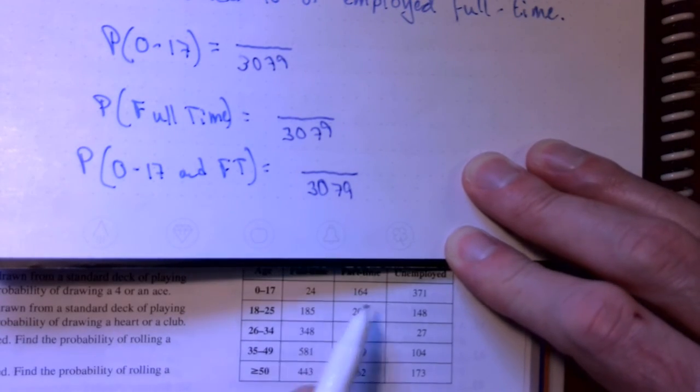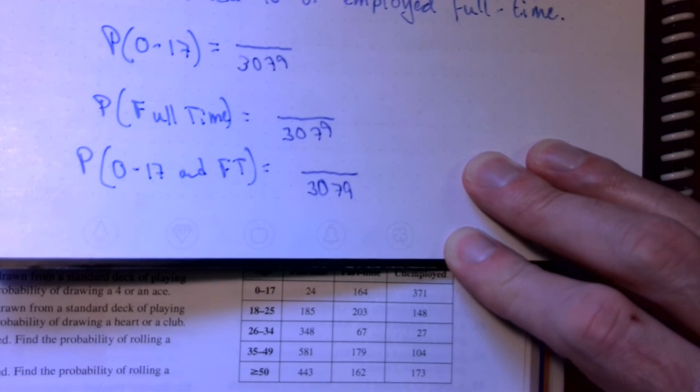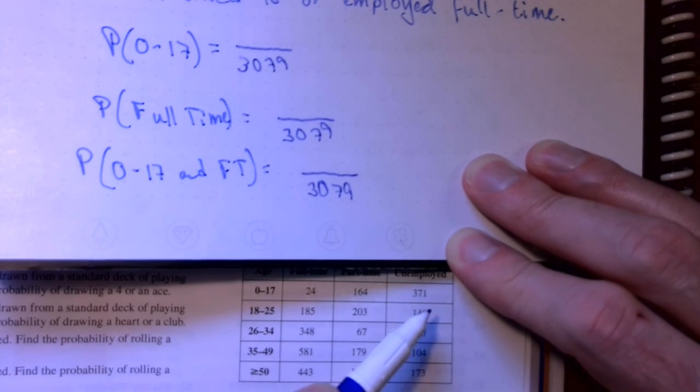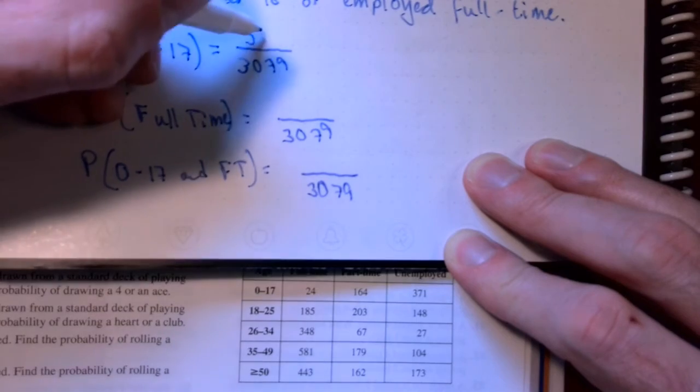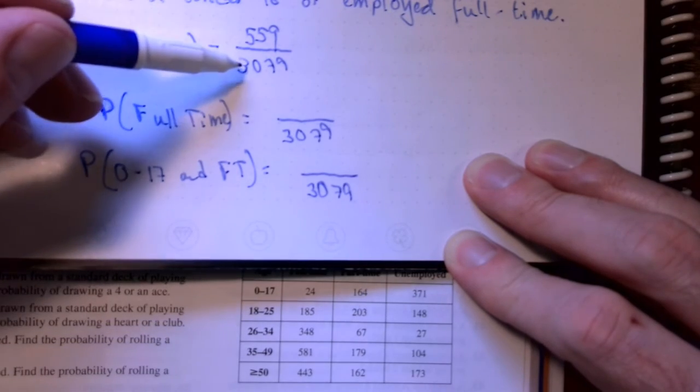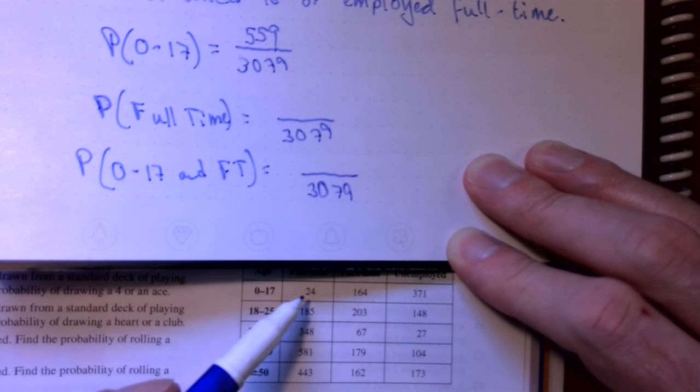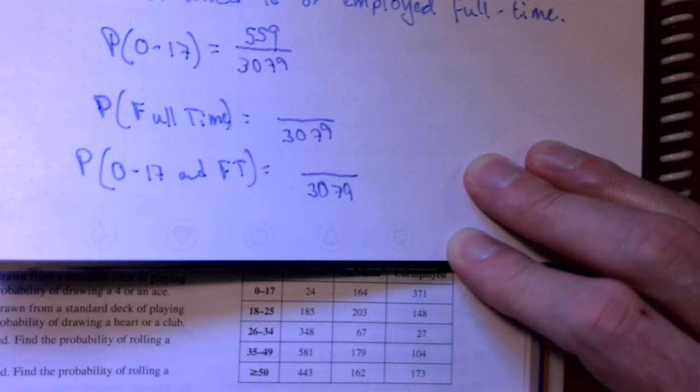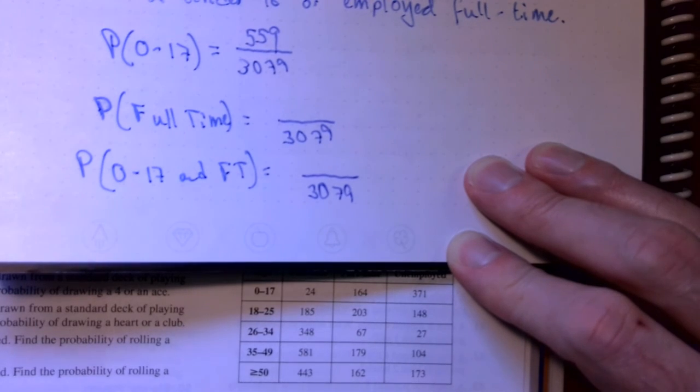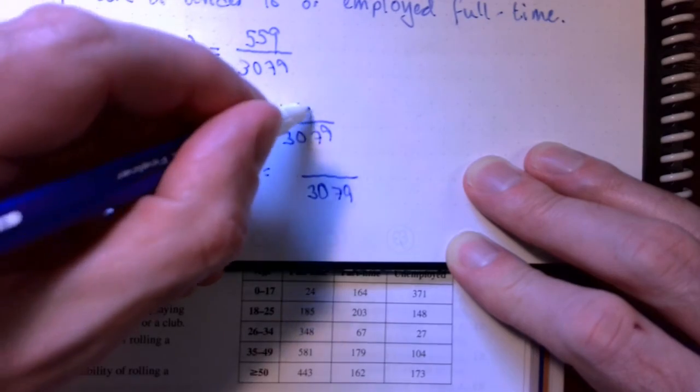If we're talking about a person being 0 to 17, I would add up the numbers in the first row going across. In other words, I would take the 24 plus 164 plus 371. And that gets me 559. So, the probability of somebody being under 18 is 559 out of 3,079. For the probability of somebody being employed full-time, I would add up everything in this column. In other words, 24 plus 185 plus 348 plus 581 plus 443. And that gets me 1,581.